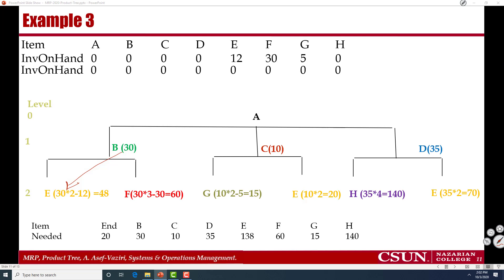E, I need 30 times 2, which is 60. But I have 12, and that leaves 48. 30 times 3 is 90. Minus 30, which is over there, makes it 60. 10 times 2, which is 20. Minus 5 makes it 15.